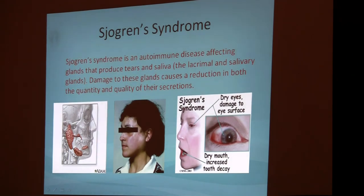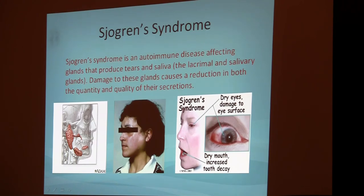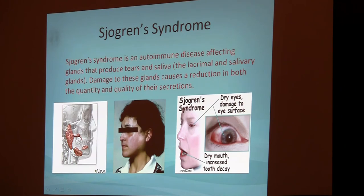Let's talk about Sjögren's syndrome. The link between Sjögren's syndrome and gluten intolerance was discovered in the early 1990s. The majority of patients who have Sjögren's syndrome express the HLA-DQ2 molecule — that is the link between gluten and Sjögren's syndrome. Sjögren's syndrome is an autoimmune disease affecting the glands that produce tears and saliva — the parotid glands and lacrimal glands. It is the most common autoimmune disease affecting humans.